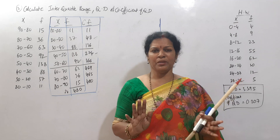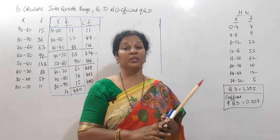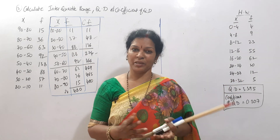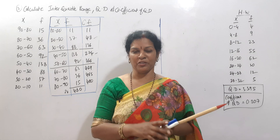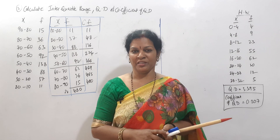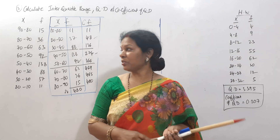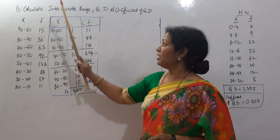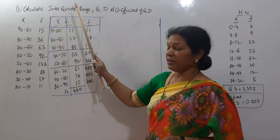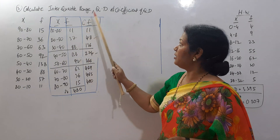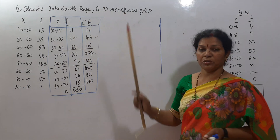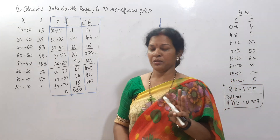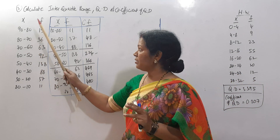It's not simple — we will calculate Q1, Q3, and the median. Then we will apply the last formula. The problem requires us to calculate the Quartile Range, Quartile Deviation, and Coefficient of Quartile Deviation. We have to calculate using the data M.